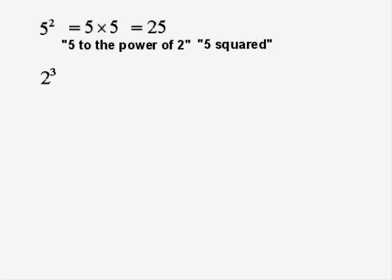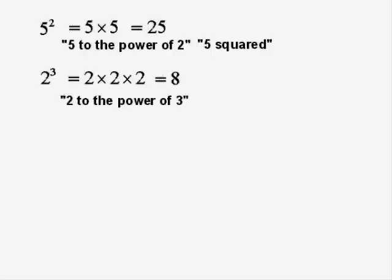2 to the power of 3 — what's that mean? It means 3 twos all multiplied together, which would be 8. We would call that 2 to the power of 3, or 2 cubed. Cubed is used when the power is 3.